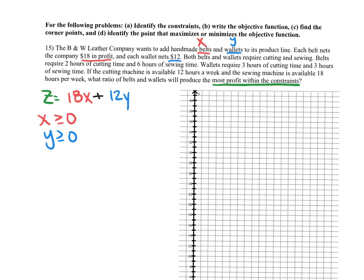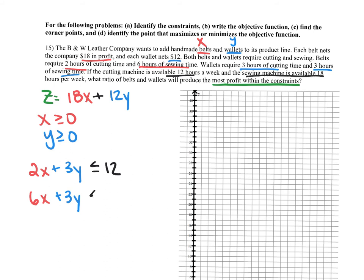We have two processes: cutting and sewing. Belts require 2 hours of cutting — that's 2x — and wallets require 3 hours of cutting — that's plus 3y — and we only have 12 hours available for cutting, so 2x plus 3y must be less than or equal to 12. Likewise, there are 6 hours of sewing for belts and 3 hours for wallets: 6x plus 3y must be less than or equal to 18.